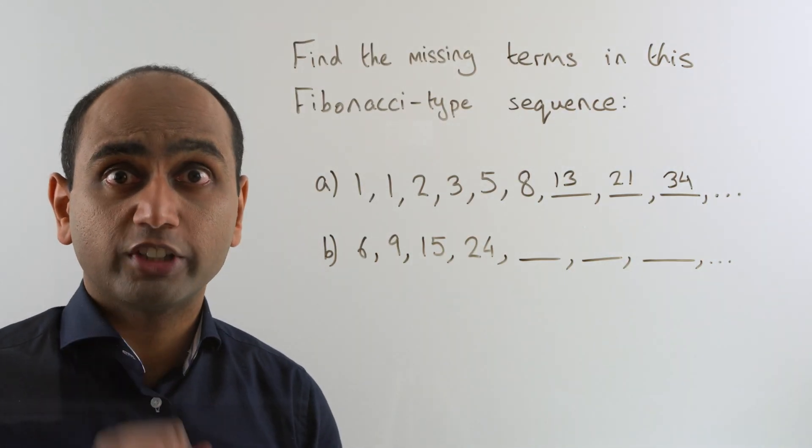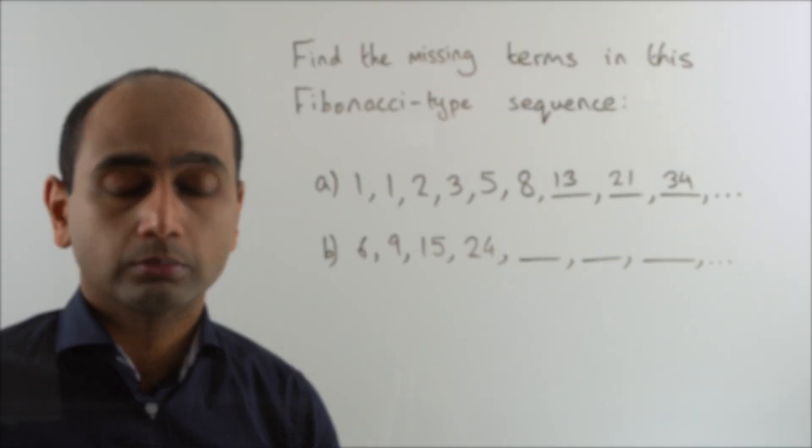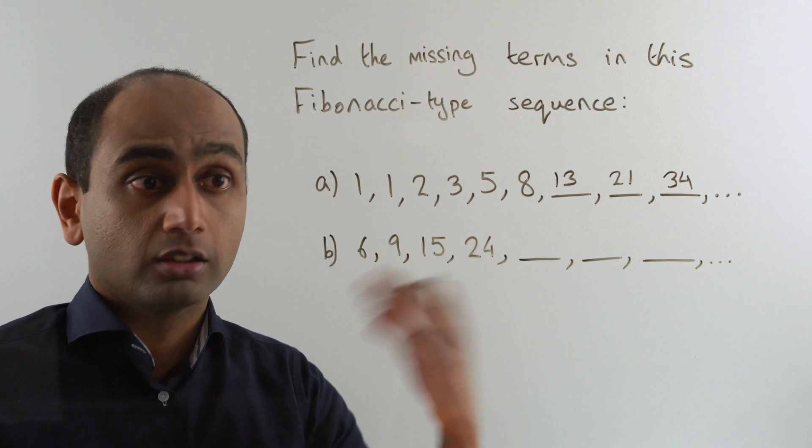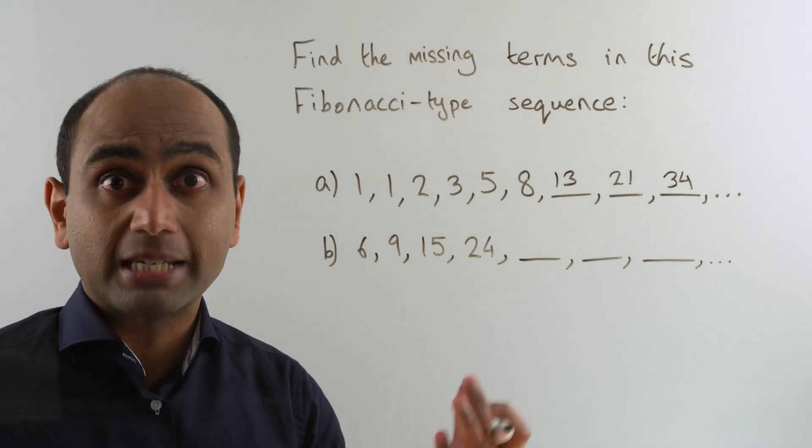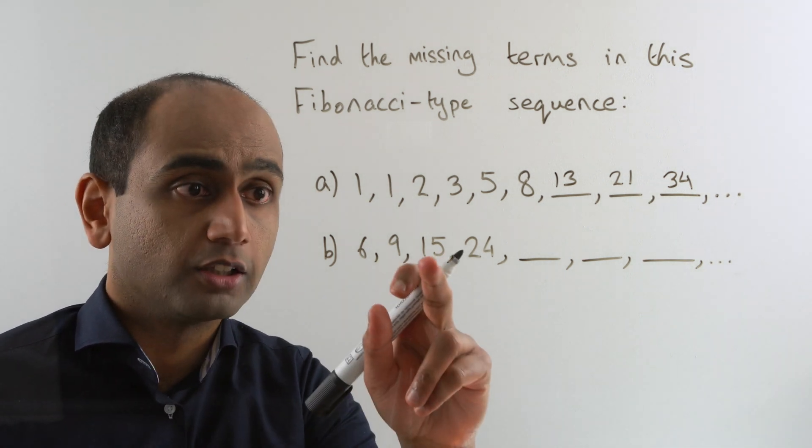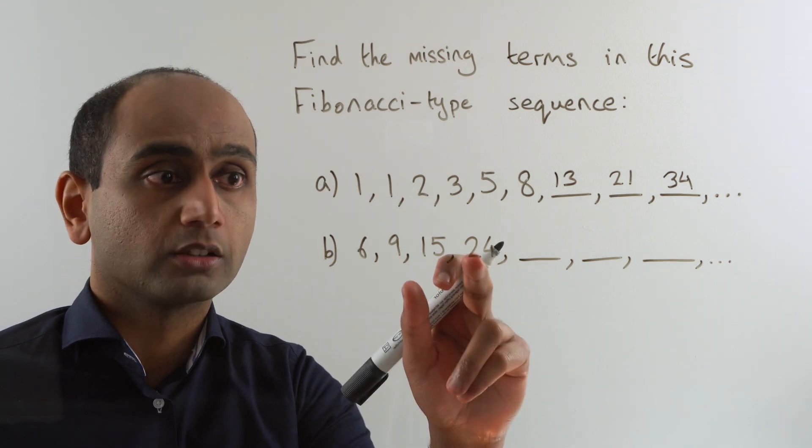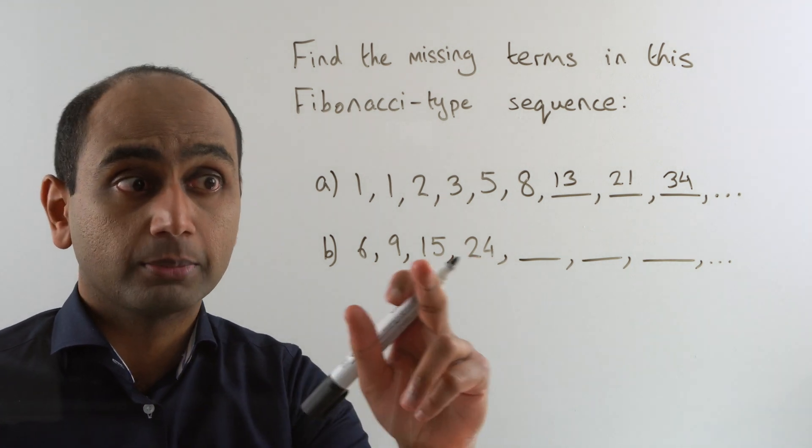Here's the second example. Pause the video and try filling in these missing numbers for yourself. Here's the answer. Notice again that this follows the same kind of rule as before. We've got two initial terms 6 and 9. The 15 is worked out by doing 6 plus 9. The 24 is worked out by doing 9 plus 15.